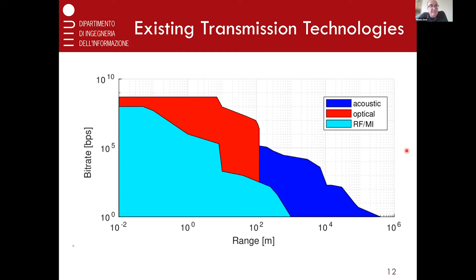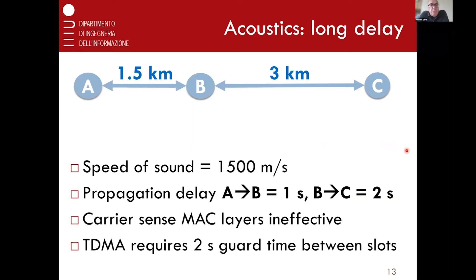A system where these two types of communication coexist is kind of natural as soon as your system is not completely trivial. It's useful to realize what the technologies can do, because then you may decide what kind of applications to assign to either, or you can decide how to switch from one to the other depending on the data requirements as well as depending on distance.